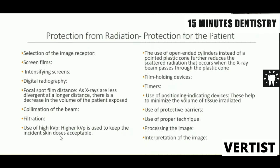The KVP and mA of the machine are important selection criteria. Cheap machines with lower KVP and mA will not give good diagnostic quality radiographs and will also have a shorter lifespan. Use open-ended cylinders, film holding devices, and electronic timers — modern timers work at 0.5 seconds compared to older spring-controlled timers measured in minutes. Use proper positioning indicating devices and protective barriers. Use a proper technique, process the image correctly, and interpret it properly. Taking a radiograph is not enough — if technique, processing, or interpretation is wrong, the entire exercise is wasted.